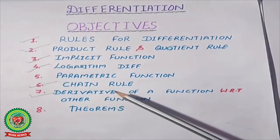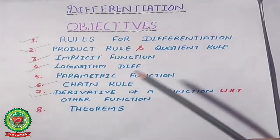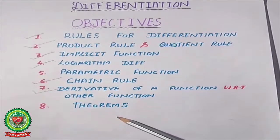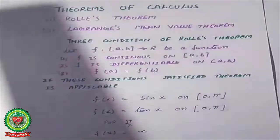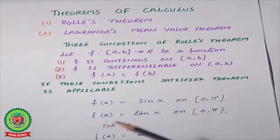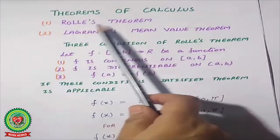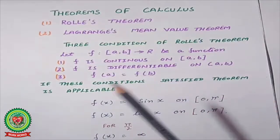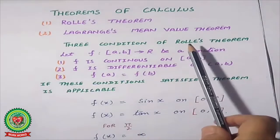In our previous lecture, we have already done a few subtopics — the general derivative of a function with respect to other functions, and differentiation of determinants. Now in today's lecture, we will discuss the theorems based on this differentiation chapter. There are two theorems: Rolle's theorem and the Lagrangian mean value theorem. In this lecture, I will discuss only Rolle's theorem.